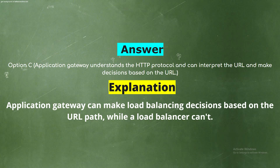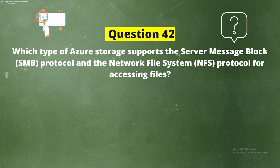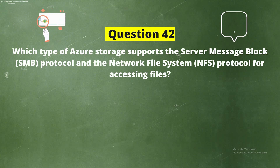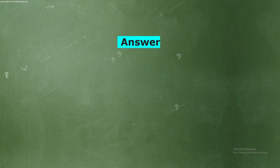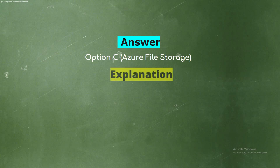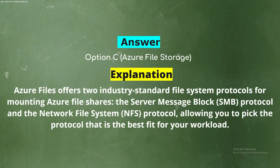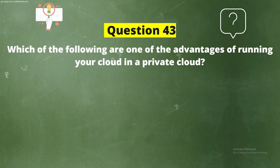Explanation: Application Gateway can make load balancing decisions based on the URL path, while a Load Balancer cannot. Question 42: Which type of Azure storage supports the Server Message Block (SMB) protocol and the Network File System (NFS) protocol for accessing files? Options: Option A, Storage Explorer; Option B, General Purpose v2; Option C, Azure File Storage; Option D, Azure Table Storage. The correct answer is Option C, Azure File Storage. Azure Files offers two industry-standard file system protocols — SMB and NFS — allowing you to pick the protocol best fit for your workload.